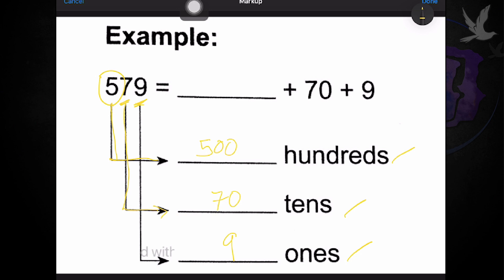And if you notice here above, we have a blank. Nine is already there given. Seventy is already given. So, what's missing is the value of five, which is five hundred. That is how you make this activity.